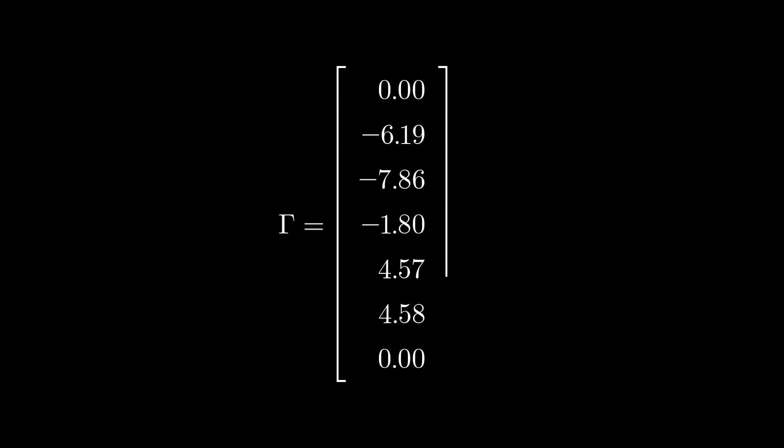So solving the system of equations we find our gamma strengths to be these. If you were following along you will see a very big difference between our results. Namely first and last row are zero and not very large positive and negative numbers that are equal in magnitude.